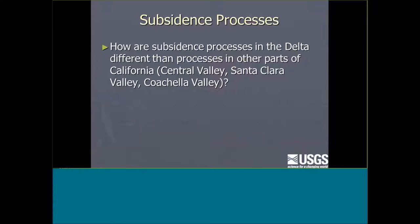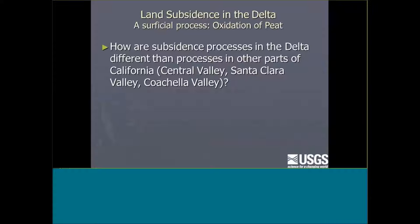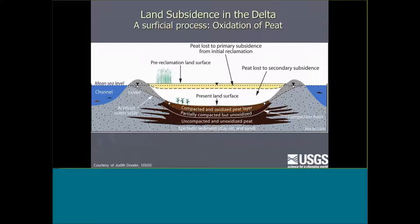During this talk, I often get a question about delta subsidence, so I'll preemptively address the difference between what's happening in the delta and what I'm mainly talking about today. In the delta, we do have well-known subsidence, but this type is a very superficial process — it's not from groundwater pumping. It's from the oxidation of peat that occurs in the delta. Peat is essentially old decayed plants; it's highly organic and very rich for farming.